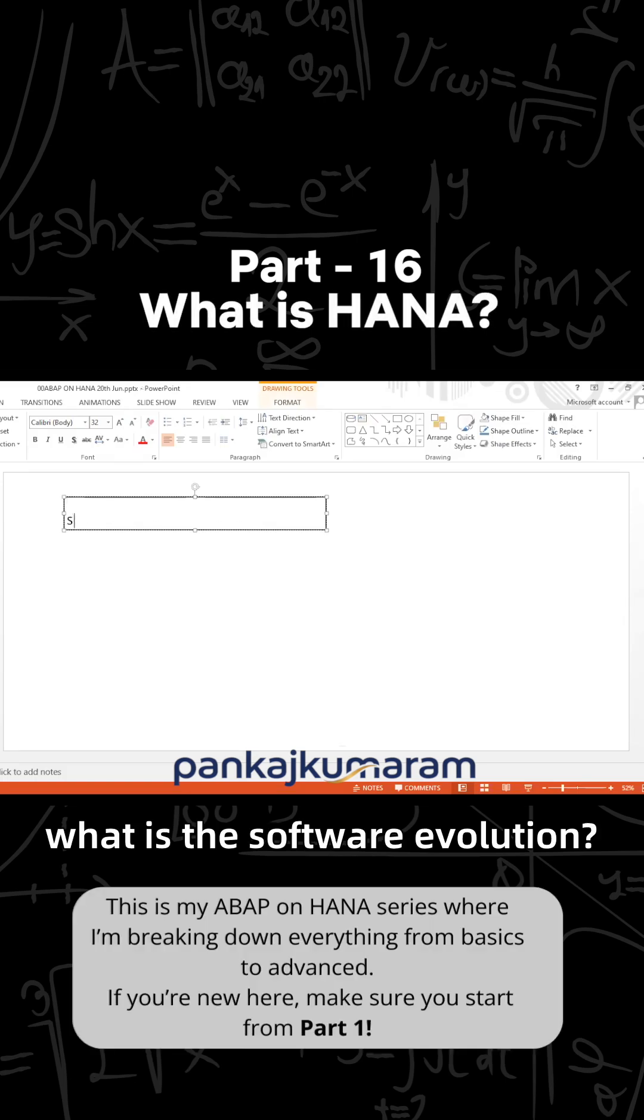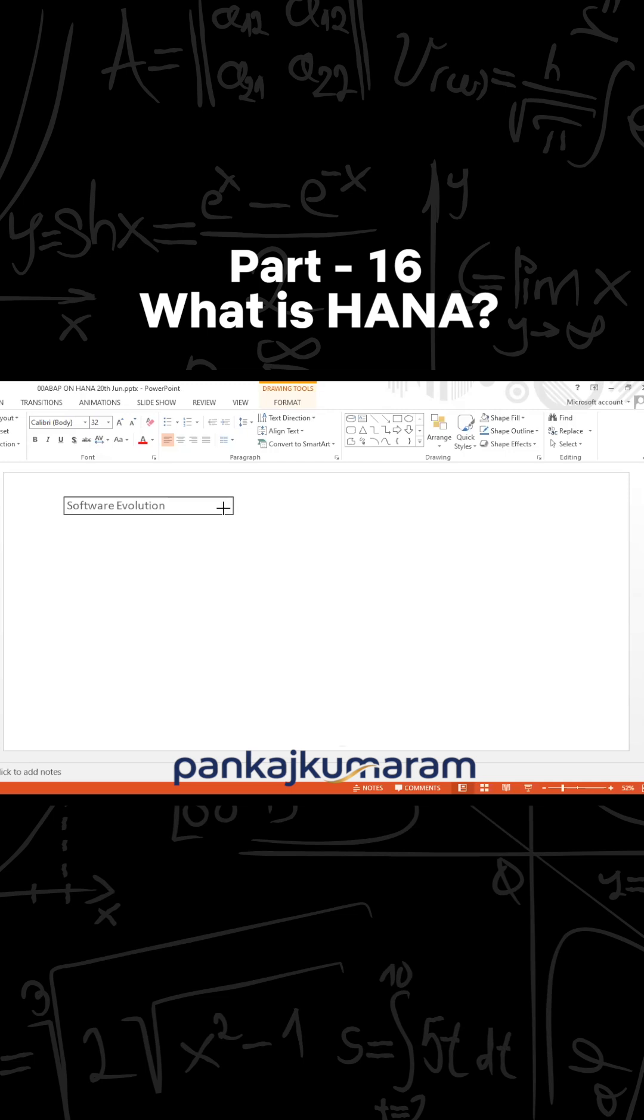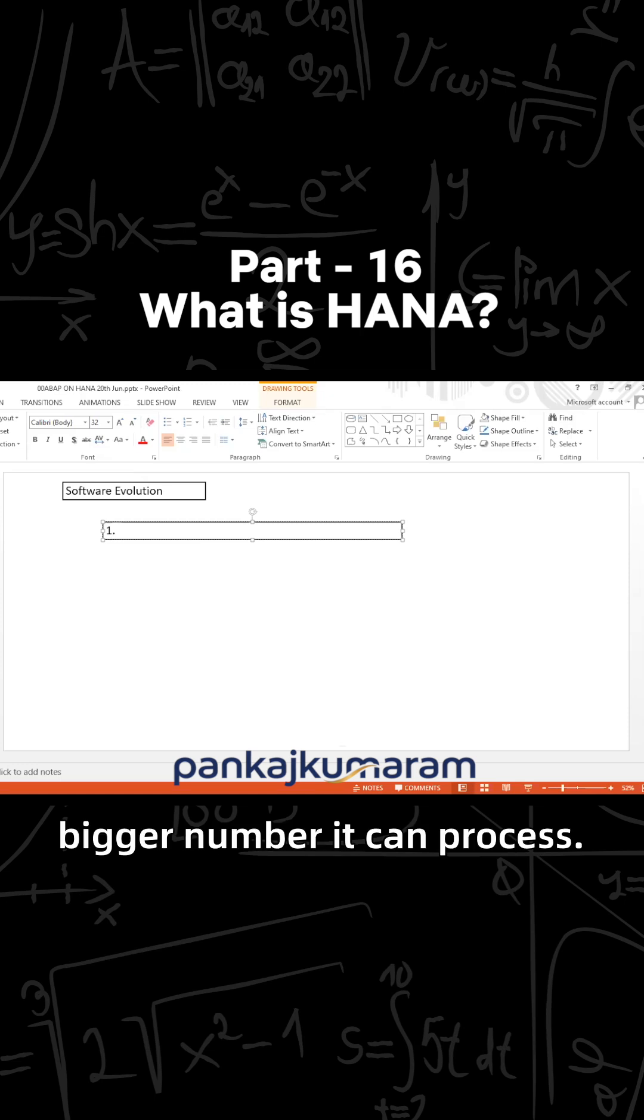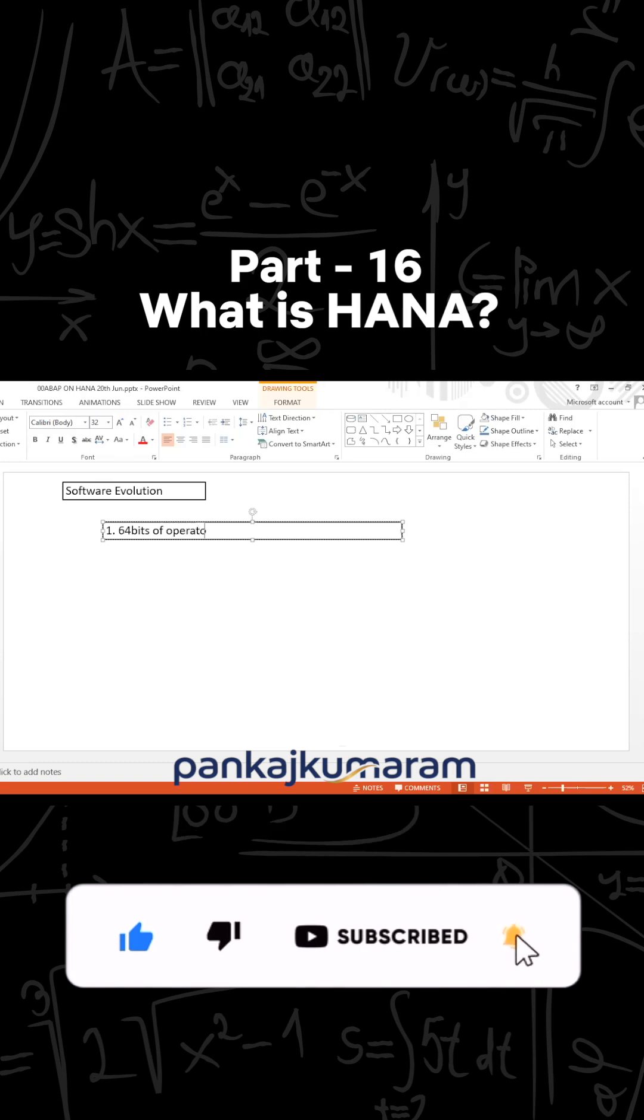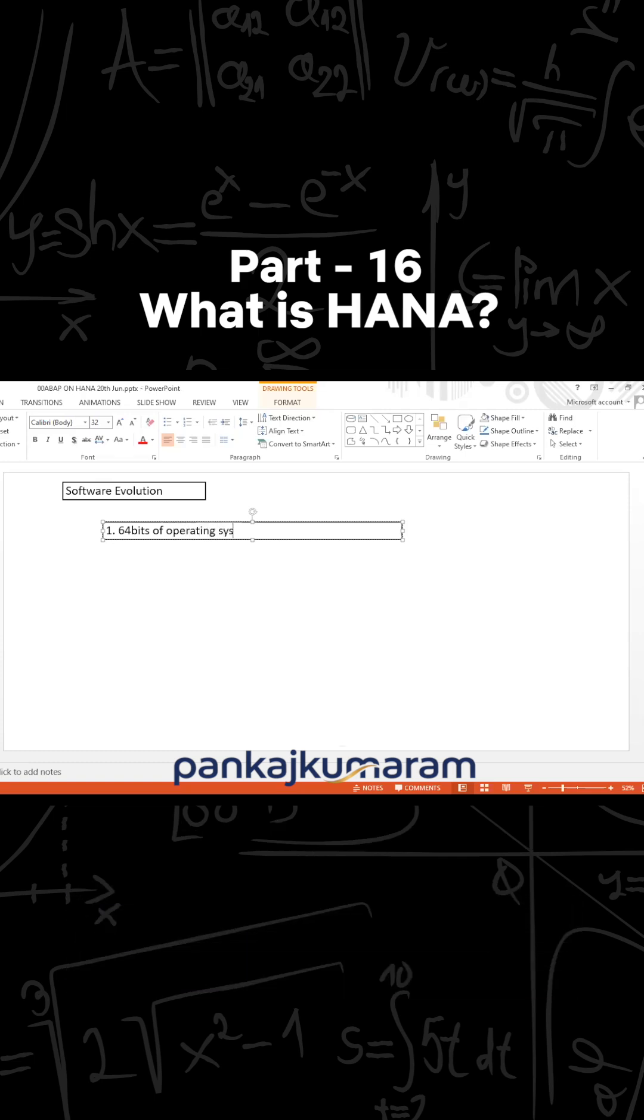What is software evolution? In software evolution, we know that nowadays operating systems are 64-bit, so they can help to process bigger sizes of data - bigger numbers they can process. This includes 64-bit operating systems and the concept of column storage.